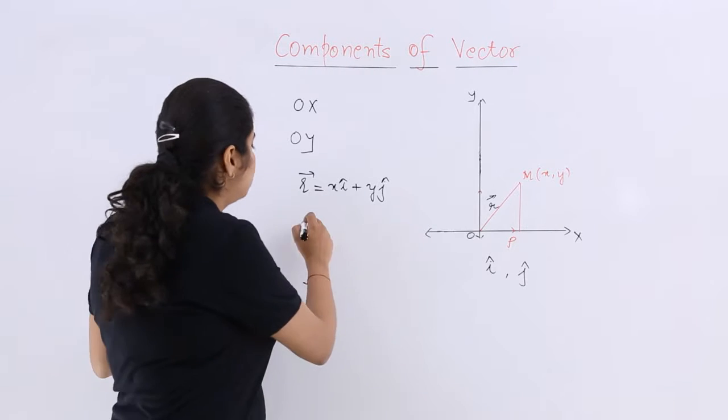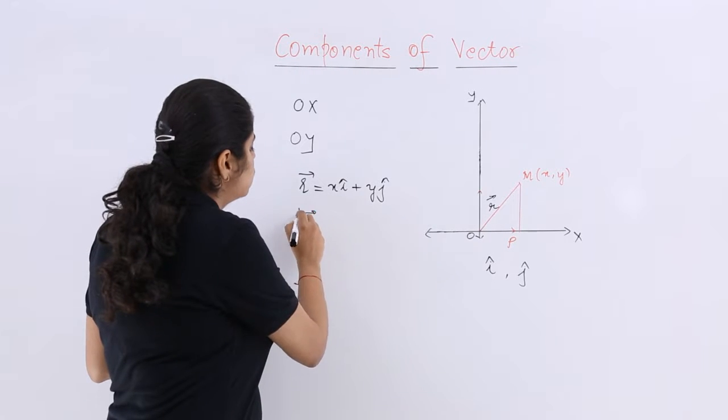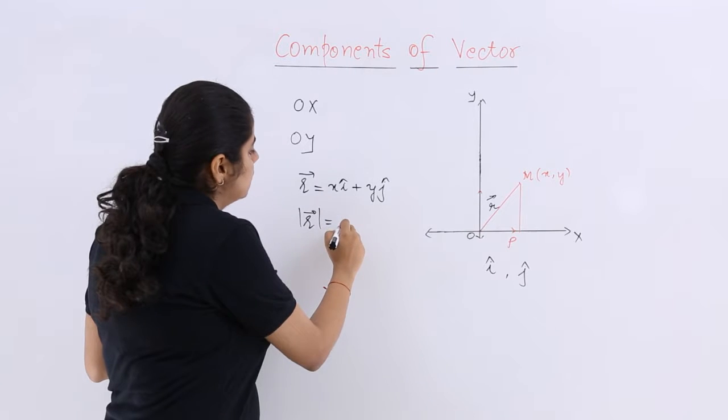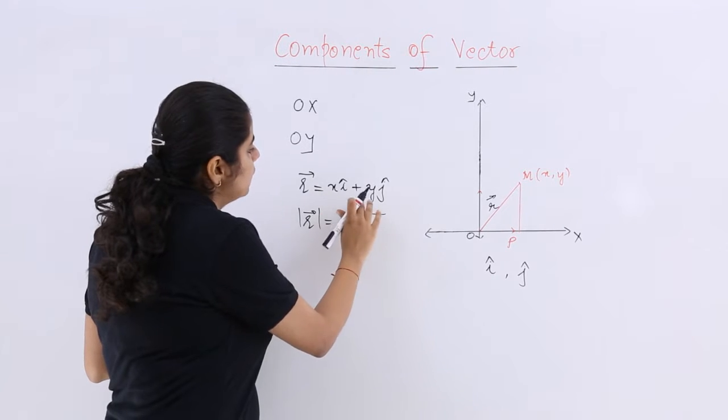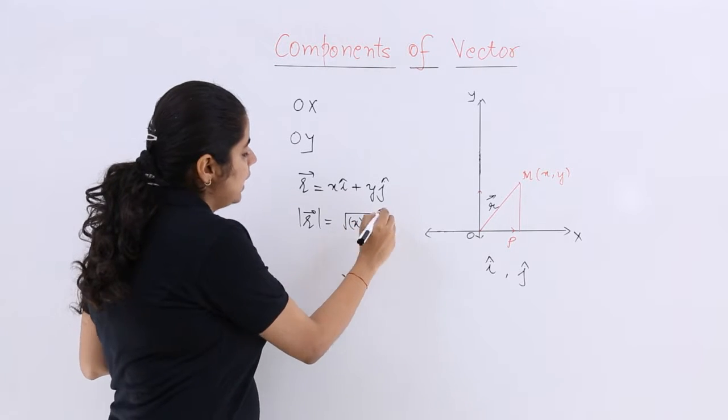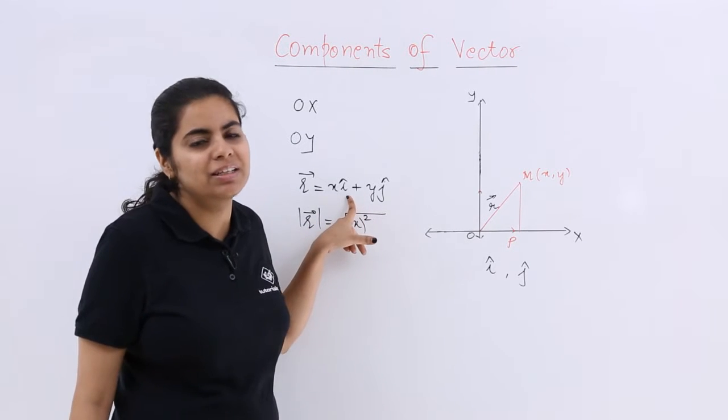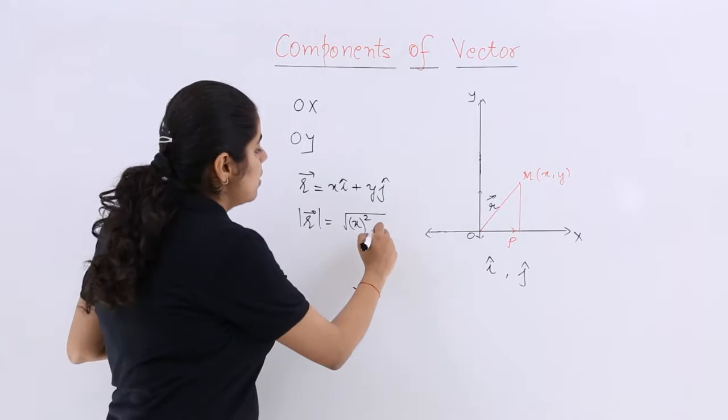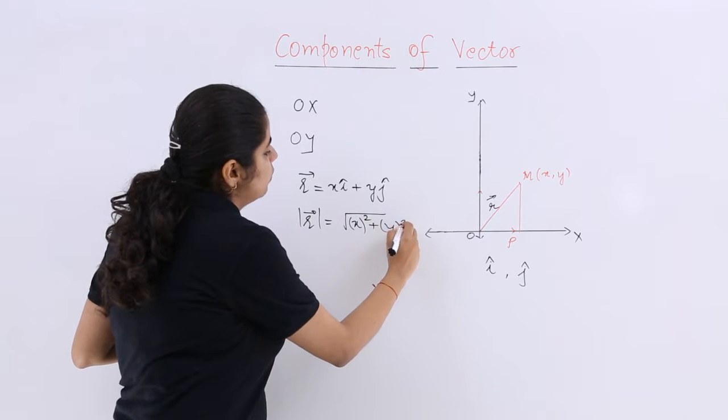Now what should be the modulus like? The modulus should be the under root of these two things. So x i cap whole square means nothing but x square because i cap is 1 only unit vector whole square 1 plus y square.